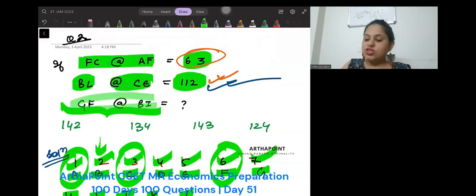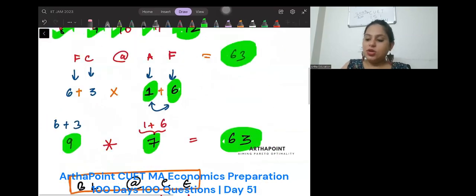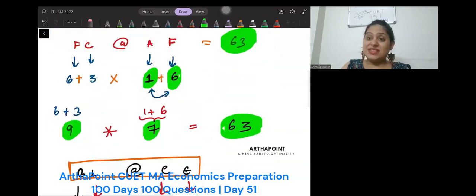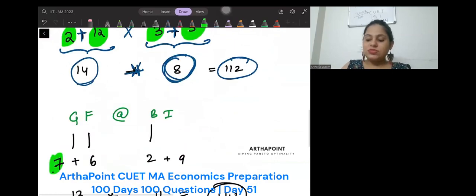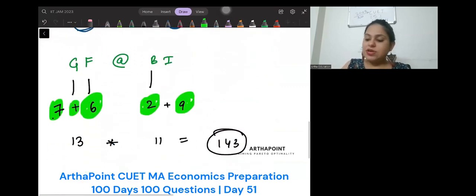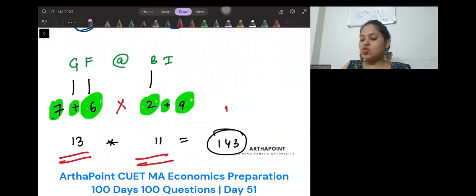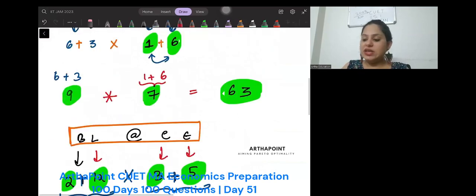Now just find this. GF at the rate BI. So G is going to be 7, F is 6, B is 2 and I is 9. Introduce a plus sign between these and a multiplication sign here. This is going to be 13 into 11, so it is going to be 143.